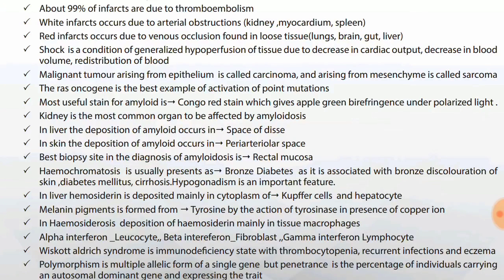Hemochromatosis usually presents as bronze diabetes — it is associated with bronze discoloration of skin, diabetes mellitus and cirrhosis. Hypogonadism is an important feature. In liver, hemosiderin is deposited mainly in the cytoplasm of Kupffer cells and hepatocytes.